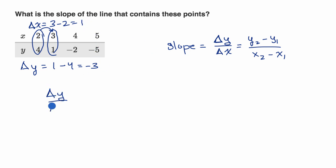What is change in y over change in x? Well, it's going to be our change in y is negative three, and our change in x is one. So our slope is negative three divided by one is negative three.